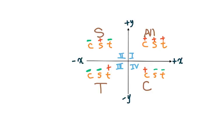For the first quadrant, all major trig functions are positive. For the second quadrant, only sine is positive — cosine and tangent are negative. For the third quadrant, only tangent is positive; the other two are negative. For the fourth quadrant, only cosine is positive; then the other two are negative.